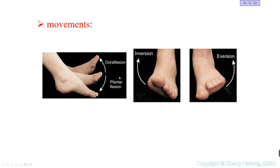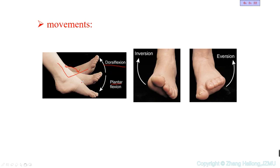The movement of the ankle joint: it can move upwards or downwards. When the foot moves upwards, we call it dorsiflexion, because the direction is toward the dorsal side of the foot. When it goes downwards, we call it plantarflexion — toward the base of the foot. So dorsiflexion and plantarflexion are the two movements.